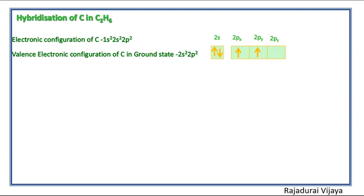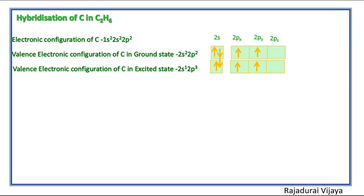On each carbon atom in ethane, there are four bonds, so the carbon atom needs four unpaired electrons. So the electron is excited from the 2s orbital to the 2pz orbital. We can say the electronic configuration in the excited state is 2s1 2p3.